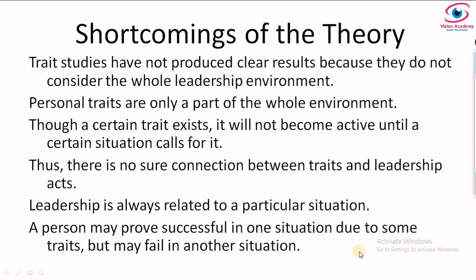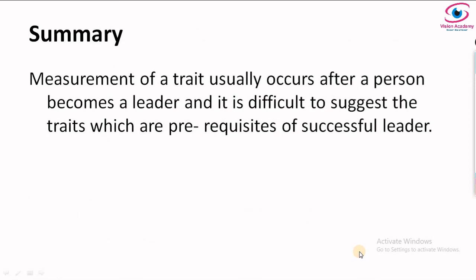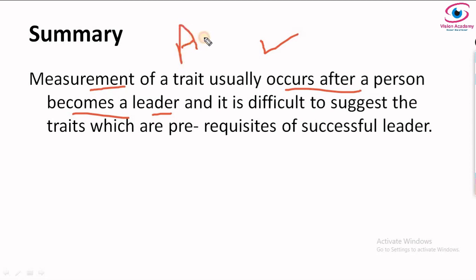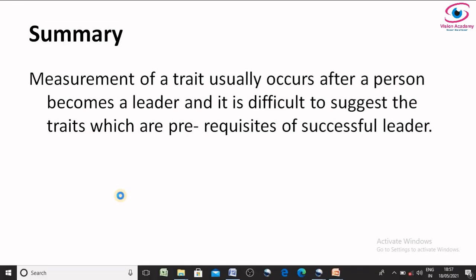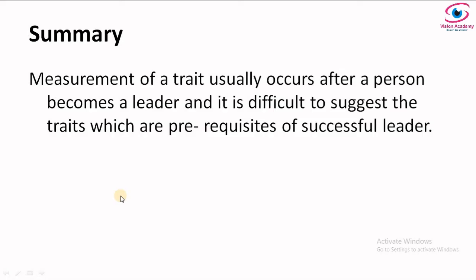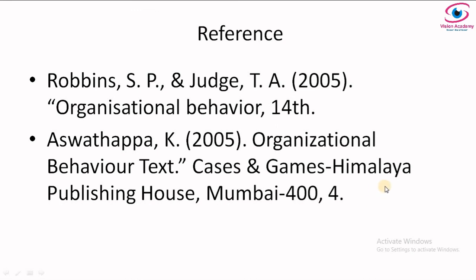Trait theory is no longer validly accepted as universally applicable; it was very famous in the mid-1800s. The final conclusion is that measurement of traits usually occurs after a person becomes a leader. If you want to measure trait theory, a person has to become a leader first, and before becoming a leader, it is difficult to measure the trait of any such person. Trait theory has so many shortcomings. I hope you understood what is trait theory and what are the characteristics of trait theory. Thank you so much for watching.